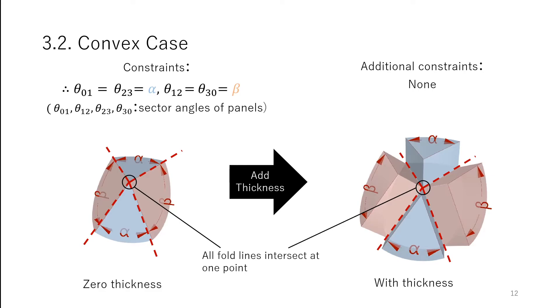In this case, the mechanism is still a spherical forward mechanism. And thus, there are no additional requirements when adding thickness.